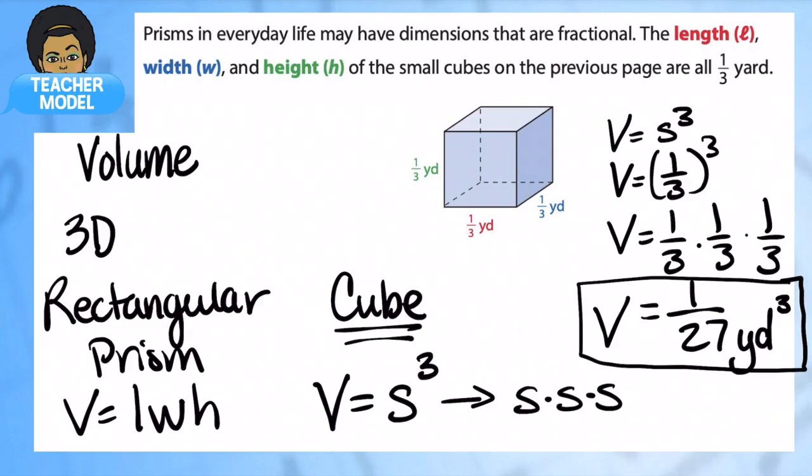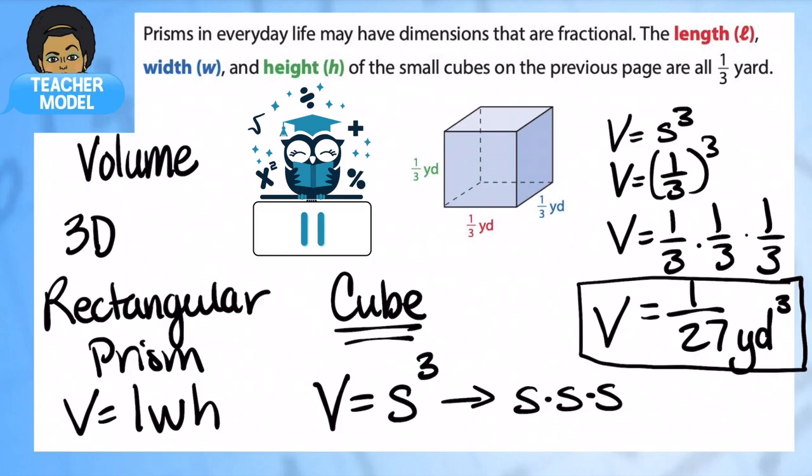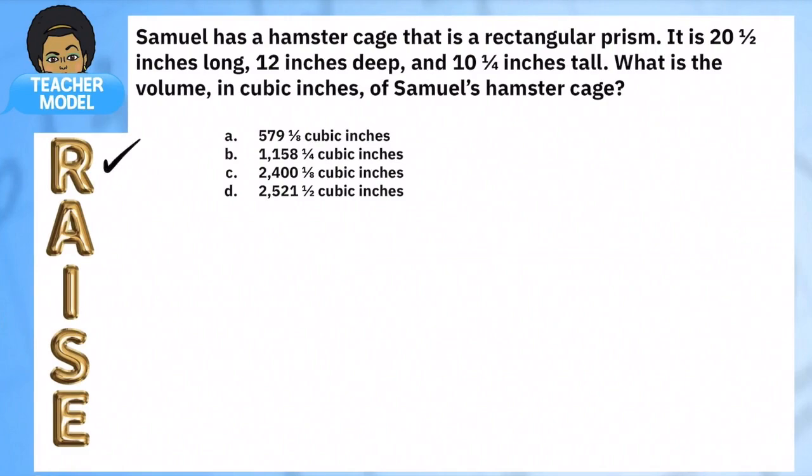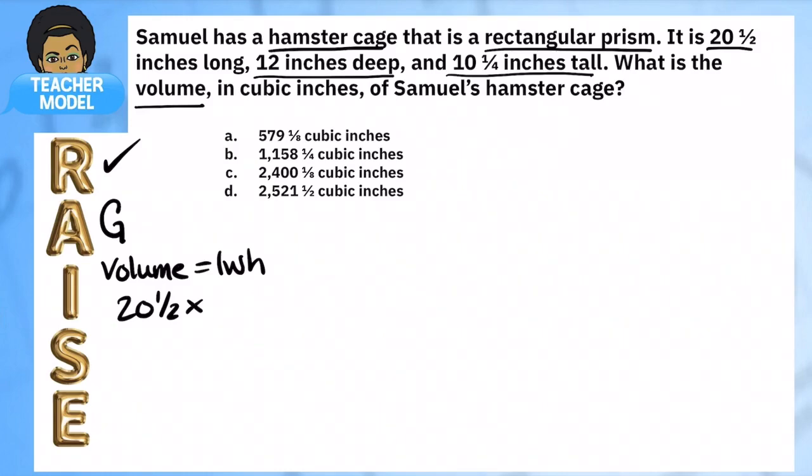We're going to look at some more examples. In this problem, Samuel has a hamster cage that is a rectangular prism. It is 20 and a half inches long, 12 inches deep, and 10 and a quarter inches tall. What is the volume in cubic inches of Samuel's hamster cage? This is definitely a geometry problem and we know our three dimensions. We're looking for volume, so volume equals length times width times height: 20 and a half by 12 by 10 and a quarter.